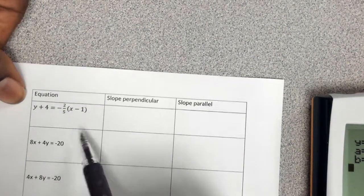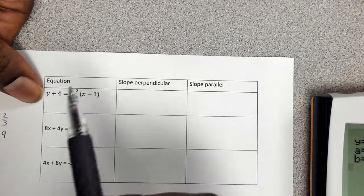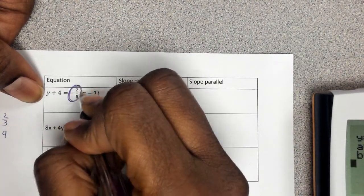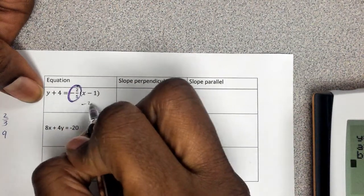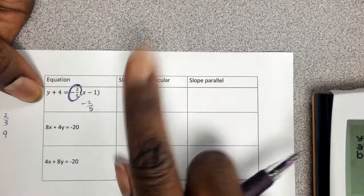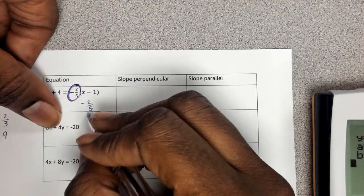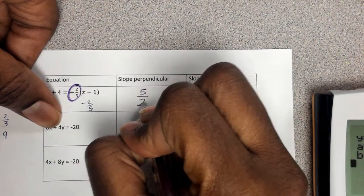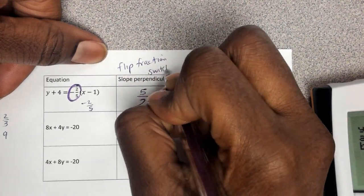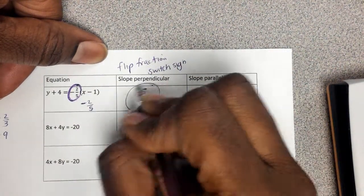These ones here talk about perpendicular and parallel slopes. So you have to be able to look at this equation and first identify the slope. And if you're looking here, this is point-slope form. Here's my slope. The slope is negative 2 over 5. Perpendicular means flip and switch. Remember we talked about perpendicular means flip and switch. Flip and switch. Flip and switch. So first you flip the fraction.